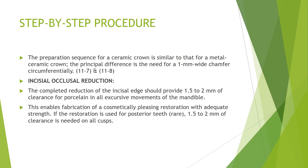For step-by-step preparation: the preparation sequence for an all-ceramic crown is similar to metal-ceramic, with the principal difference being a 1 mm wide chamfer or shoulder circumferentially. For incisal/occlusal reduction, 1.5 to 2 mm clearance must be given — 2 mm is recommended to be on the safer side, enabling fabrication of a cosmetically pleasing restoration with adequate strength.